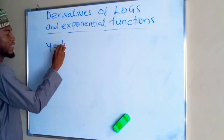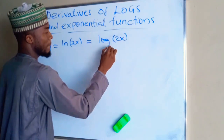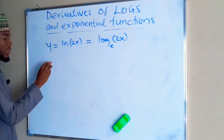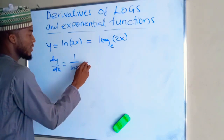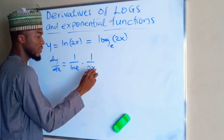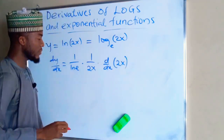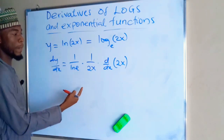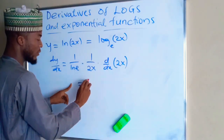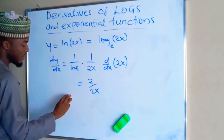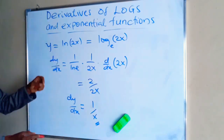Now if y equals ln(2x), this is the same thing as log of 2x base e. dy over dx will be equal to 1 over the natural log of e times 1 over the function 2x, times the derivative of that function, d over dx of 2x. Natural log of e is 1, so 1 divided by 1 is 1. The derivative of 2x is 2, so we end up having 2 over 2x. Therefore dy over dx is just 1 over x. So this is the derivative of natural log of 2x.